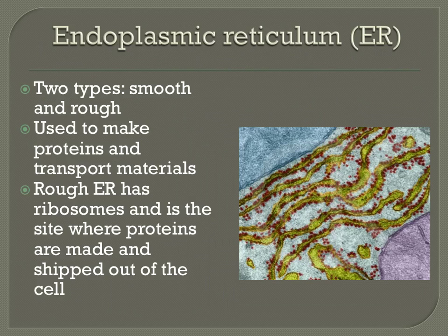The first example of a membrane-bound organelle we'll discuss is the endoplasmic reticulum, often abbreviated as the ER. There are two different types of endoplasmic reticulum, both involving the transport of materials within the cell. The first type is referred to as rough ER — it's called rough because it has ribosomes littering the surface, giving it a bumpy appearance. Since ribosomes make proteins and endoplasmic reticulum moves materials, the two work in conjunction to produce and move proteins throughout the cell.